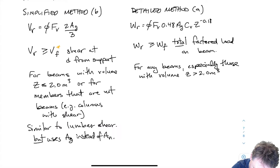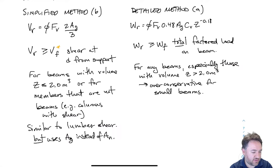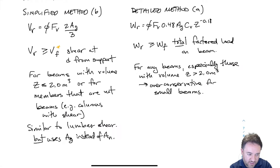When do I use the detailed method? I can use it on any beam regardless of size, but especially I need to use it for beams that have a large volume — a volume greater than 2.0 meters cubed. I can use it for smaller beams as well, but it turns out it will be over-conservative for those. So there is a benefit for small beams to using the simplified method instead.